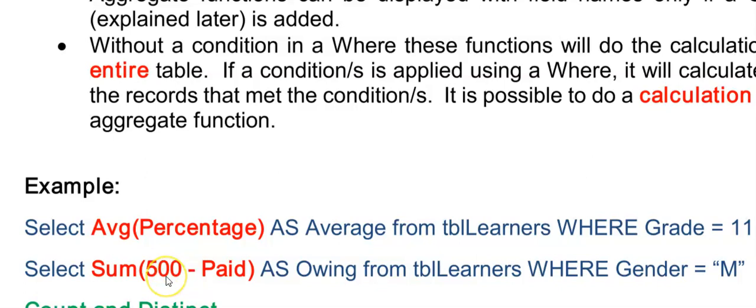it's an example of learners that had to pay 500 Rand towards a camp. And in the paid field was how much they've paid up to now. So inside of the round brackets, I'm calculating how much each person owes. And the sum is adding all of that together.